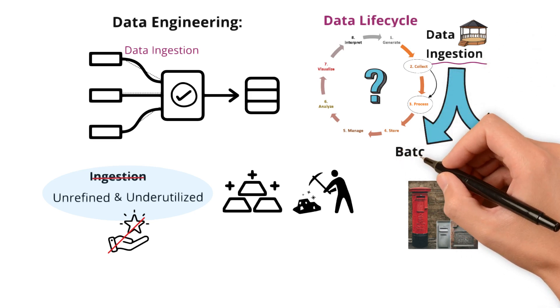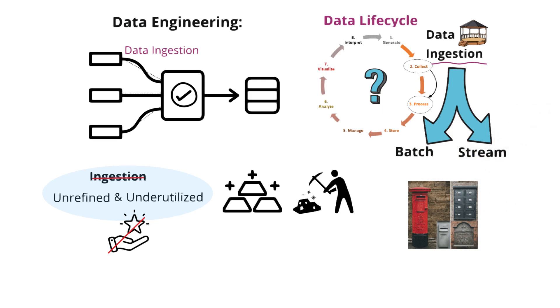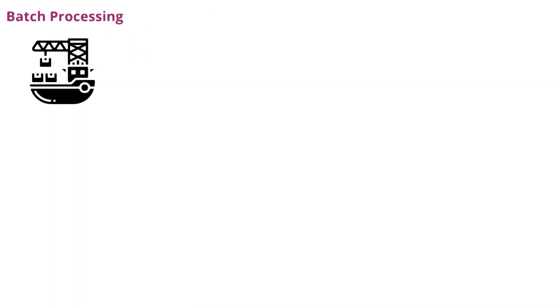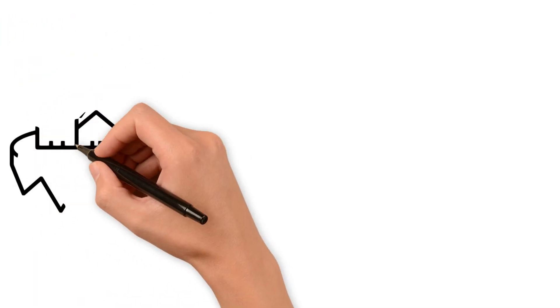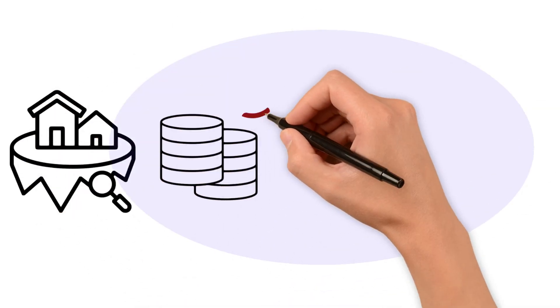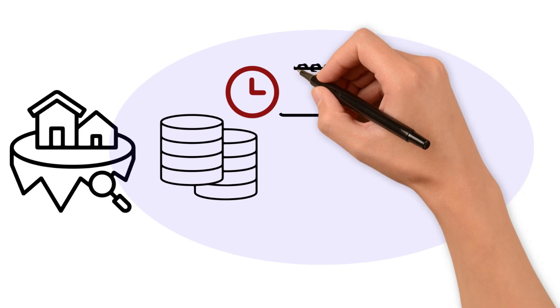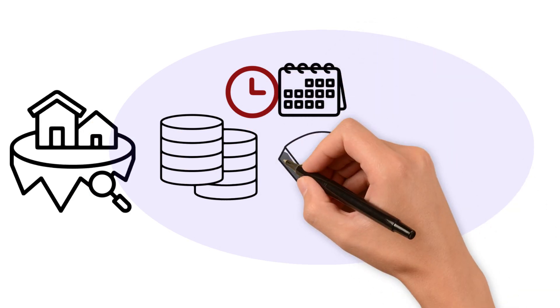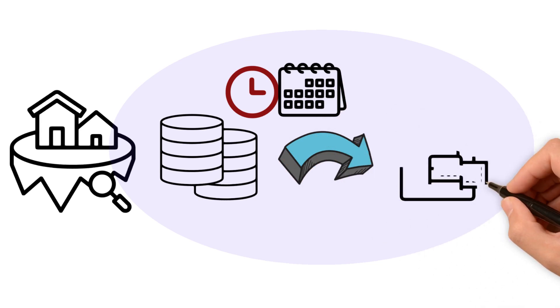One is batch processing and the other is stream processing. Batch processing is similar to organizing a bulk shipment of packages to be sent out together. In the realm of data, this means gathering information over a set period daily, weekly or monthly, and then processing it collectively as a single large group at a regular schedule.